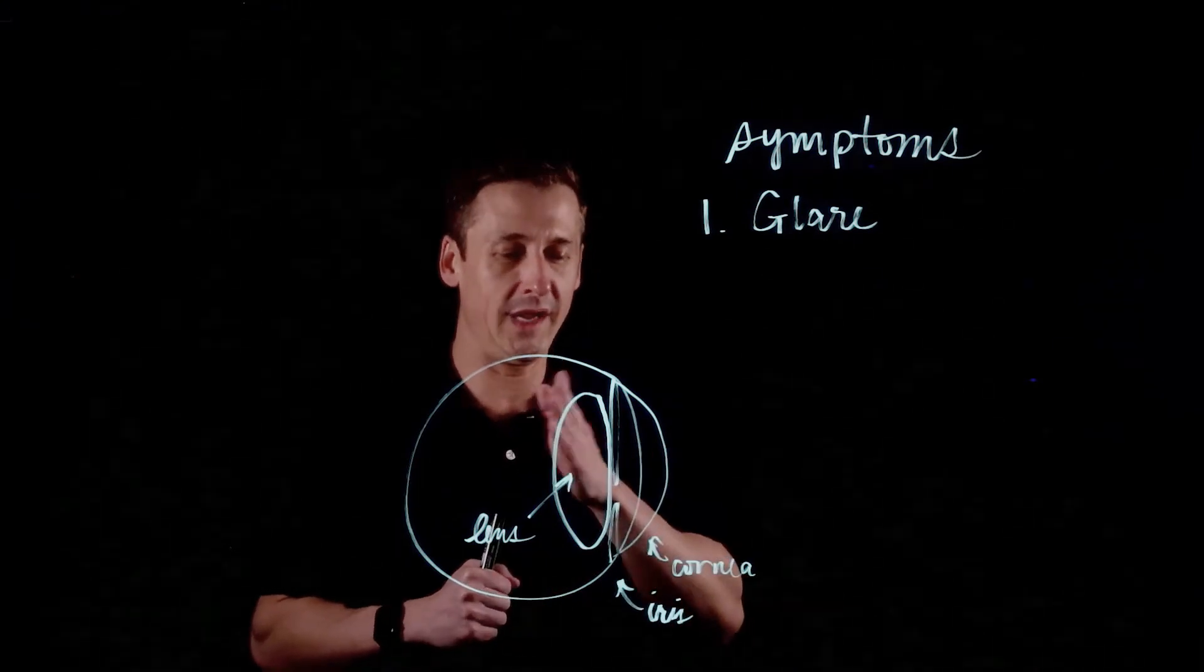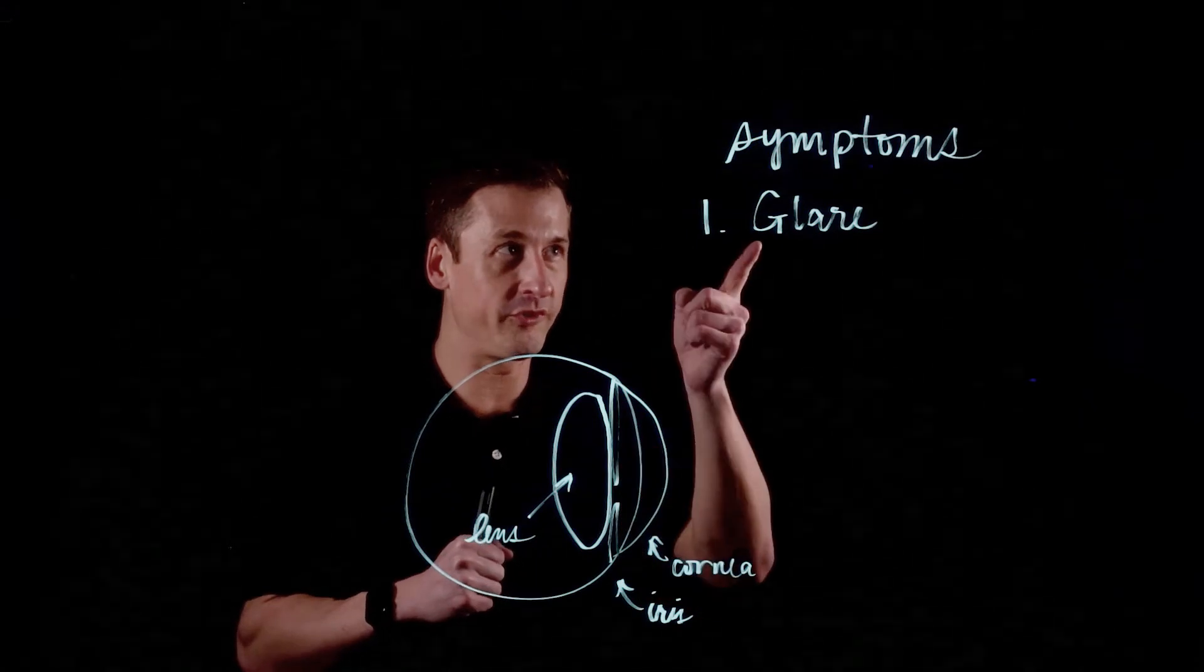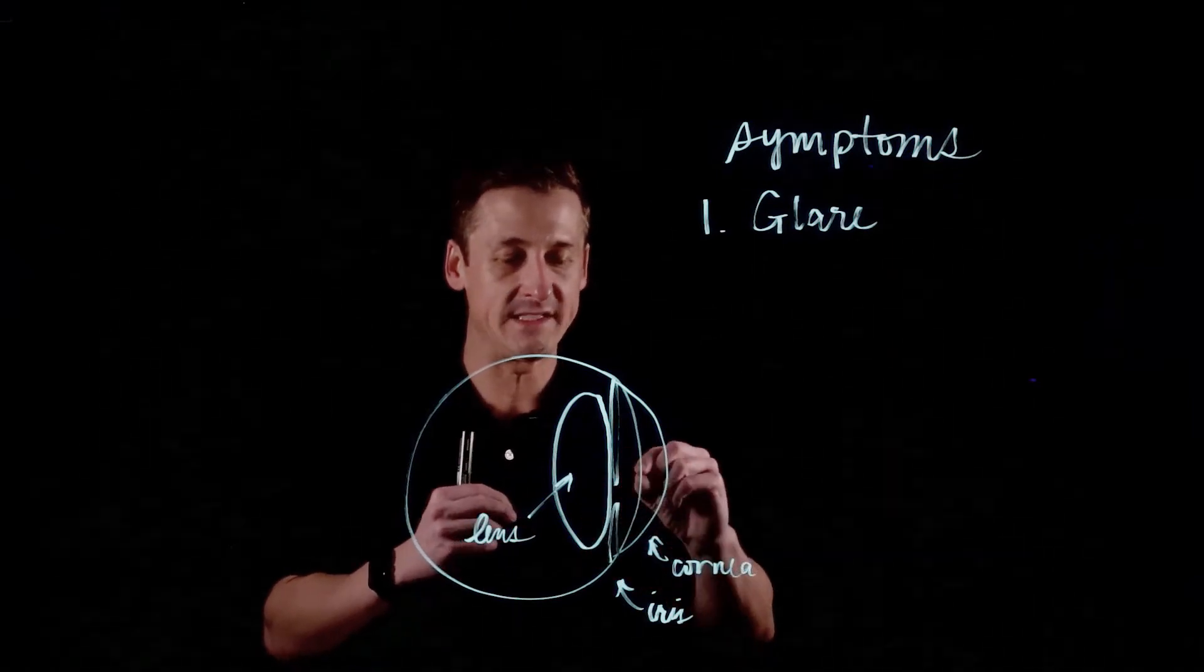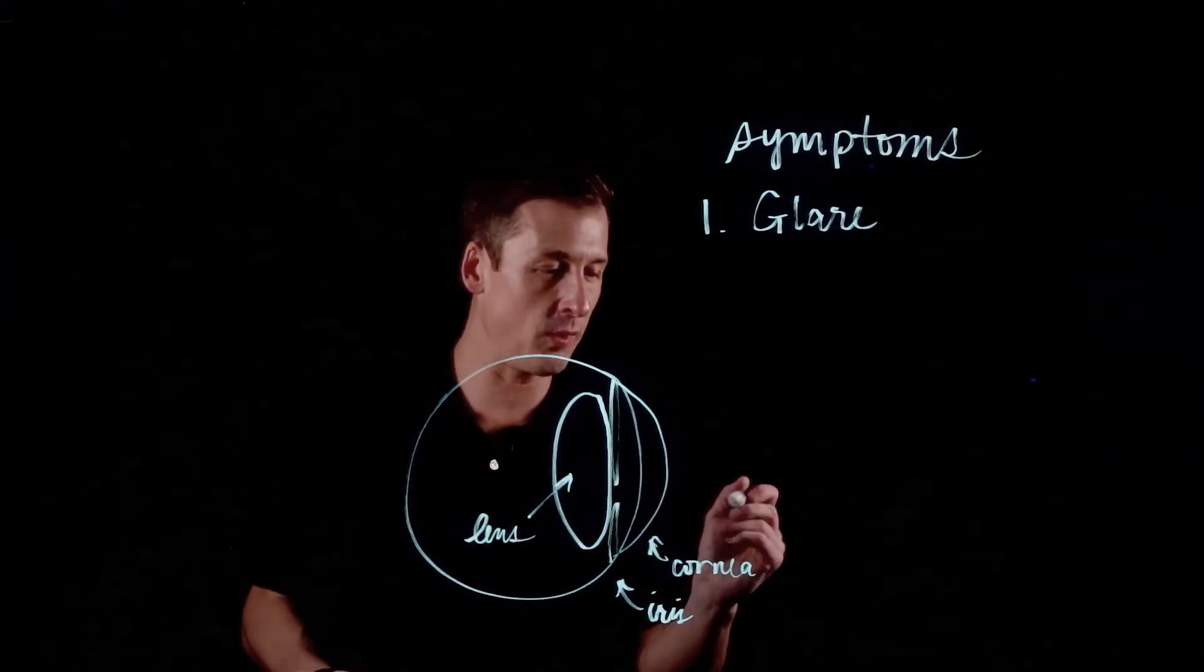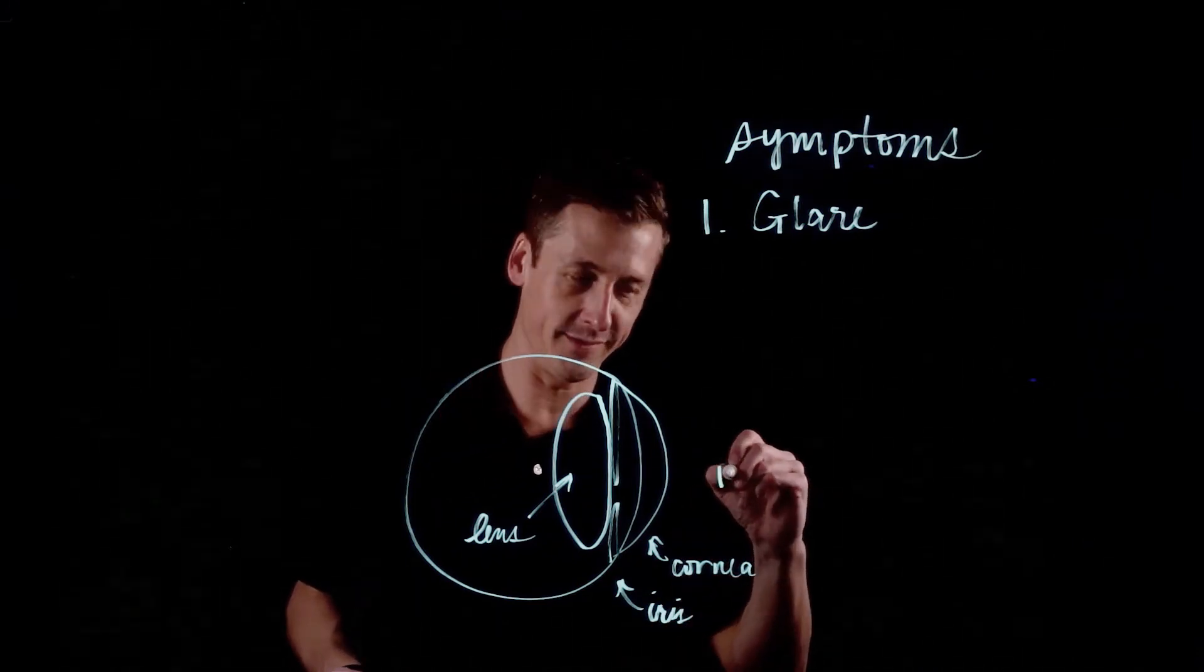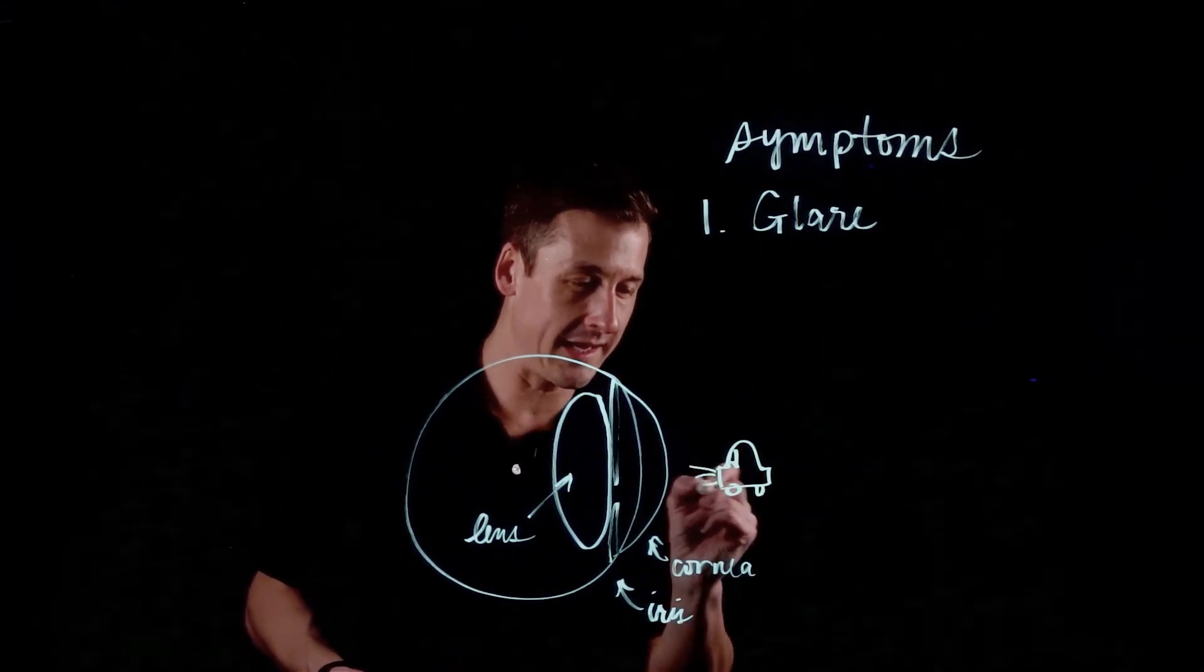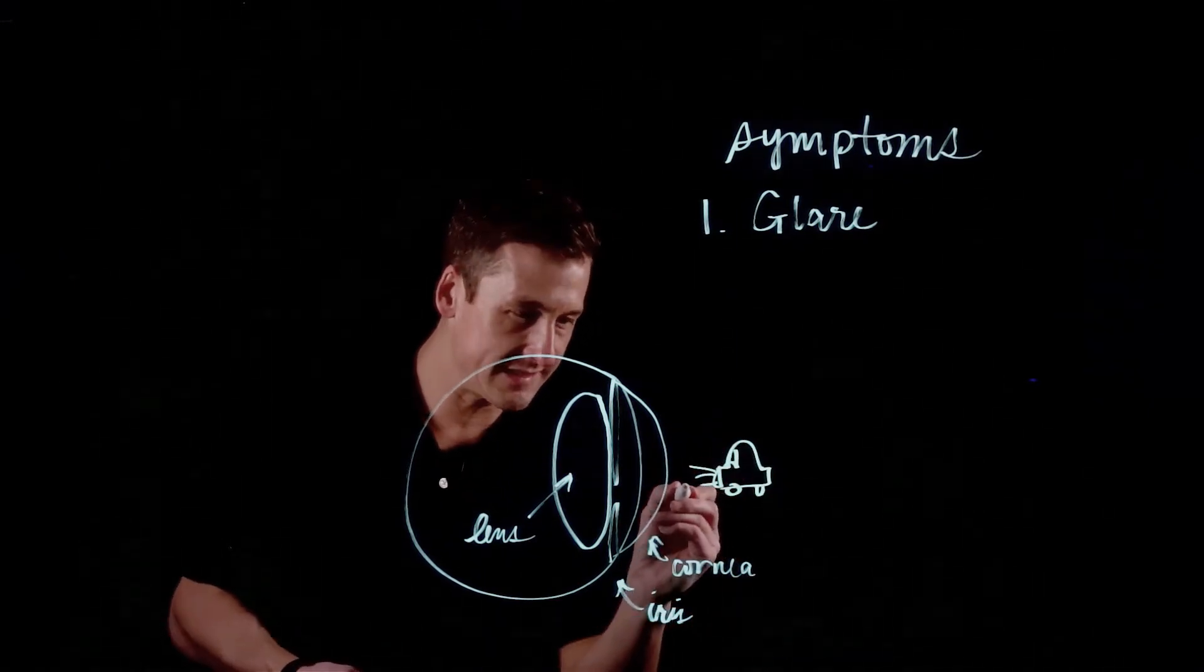And so the way that it changes over time, you'll notice first and foremost glare. And the reason for that is as lights coming in from a car headlight or something, it's hitting the dense fibers inside your lens and it's getting sprayed everywhere. So what you want is for this, I'm not a good drawer here, this is my drawing of a car, there we go. It's got headlights, this is supposed to be headlights shining.